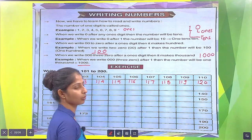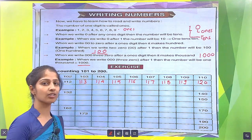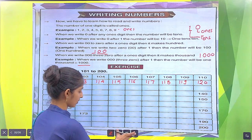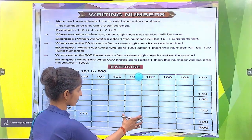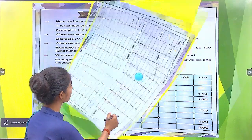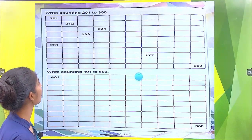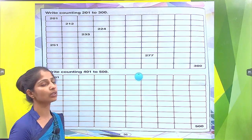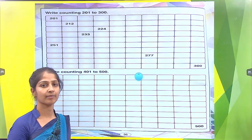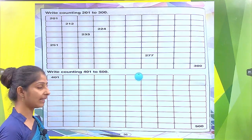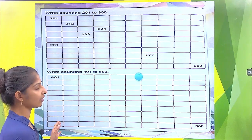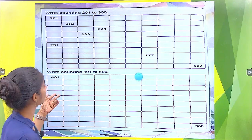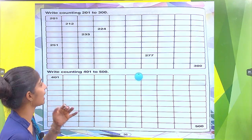Similarly, you do the exercise with the help of your parents. Open your next page. Write counting 201 to 300. Just as we wrote 101 to 200, similarly we write 201 to 300.